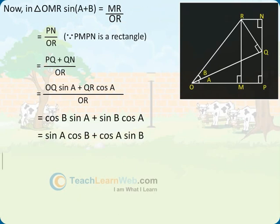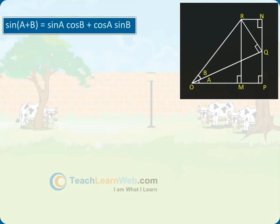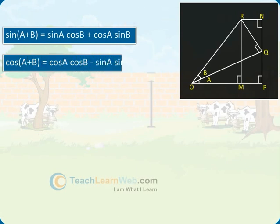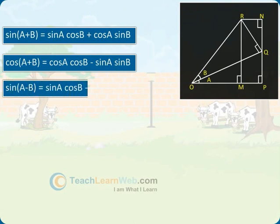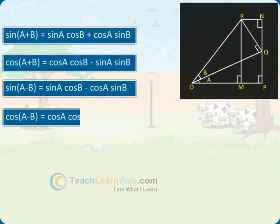Therefore, sine of A plus B equals sine A cos B plus cos A sine B. Cosine of A plus B equals cos A cos B minus sine A sine B. Sine of A minus B equals sine A cos B minus cos A sine B.